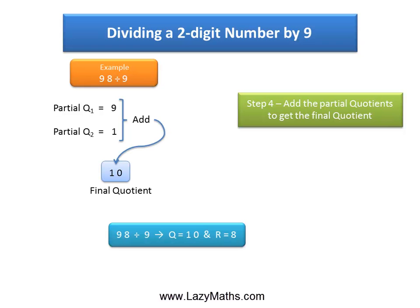So our final answer for 98 divided by 9 is Q10 R8, or quotient 10 remainder 8. And that's it. Thank you.